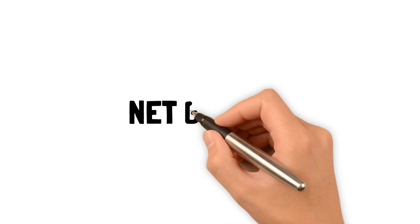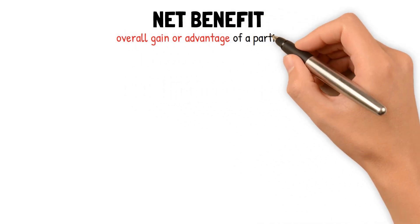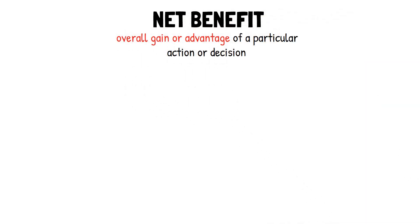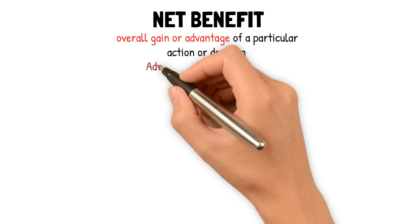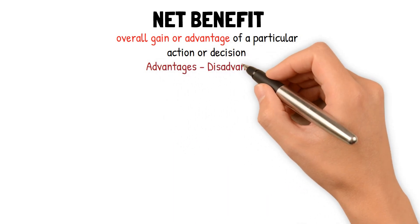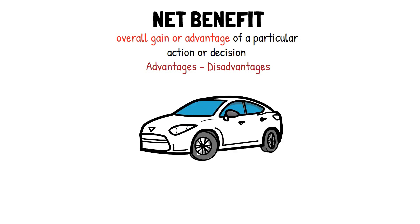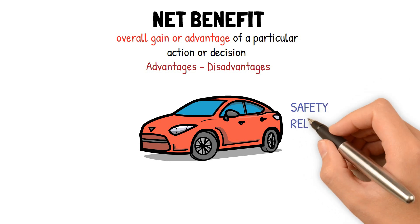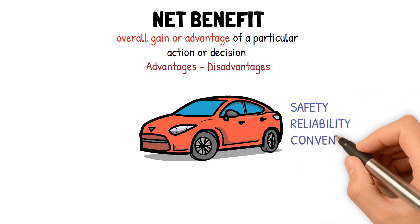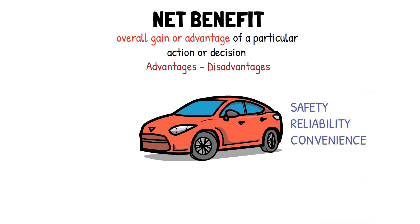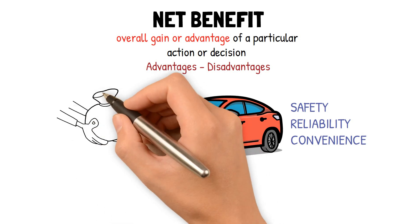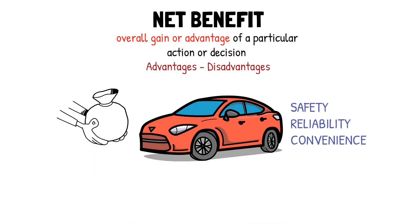Net benefit measures the overall gain or advantage of a particular action or decision. It is calculated by subtracting the costs or disadvantages of the action from its benefits or advantages. For example, consider purchasing a new car. The benefits include increased safety, reliability, and convenience, while the costs include the initial purchase price, maintenance costs, and insurance premiums.